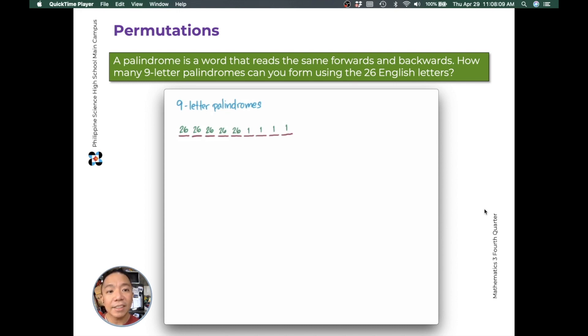And then in the middle, you have 26 possibilities still. Because we have no rules limiting the letters, and we can form a palindrome even if it's not a real English word. Computing this, it's 26 to the fifth power, or 11,881,376 nine-letter palindromes.